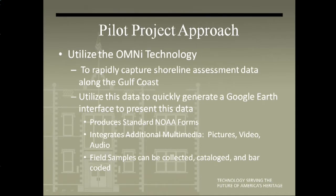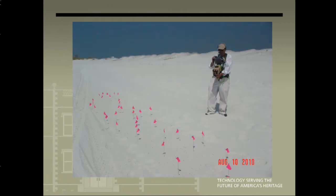Utilizing the AMI technology, we rapidly captured shoreline assessment data along the Gulf Coast following the BP oil spill. We utilized this data to quickly generate a Google Earth interface by generating standard NOAA forms. It integrates additional multimedia — pictures, video, audio — and field samples can be collected, cataloged, and barcoded. The AMI has a variety of uses and can be adapted to document archaeological sites as well as environmental data. Here we are using the AMI to survey and map tar balls at Gulf Island National Seashore.